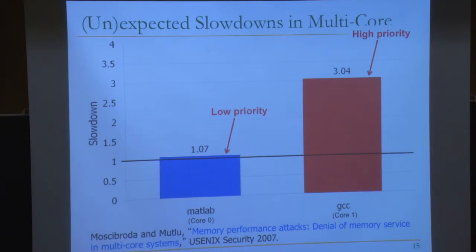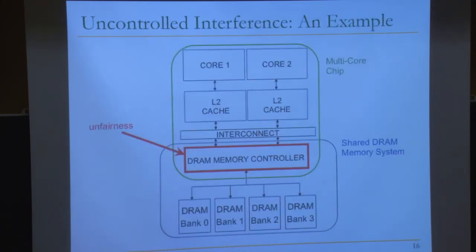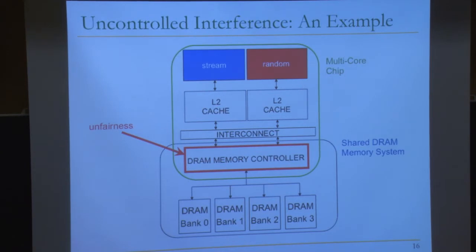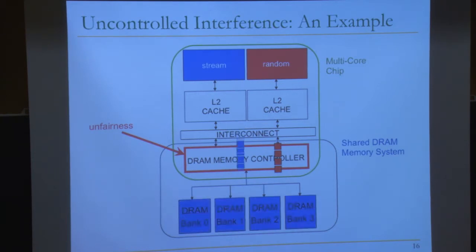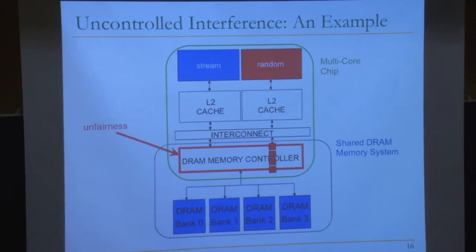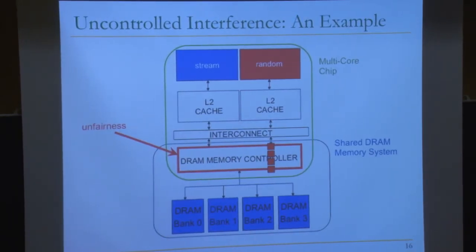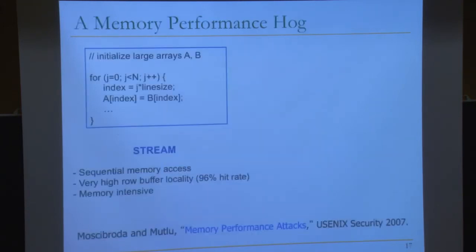The memory controller, for some reason, prioritizes the streaming application over and over. As a result, the random access application starves. We've actually written programs to demonstrate this — this is from the memory performance attacks paper. We ran a stream workload, used to test memory bandwidth on existing systems, which initializes two large arrays A and B and copies one array to the other.